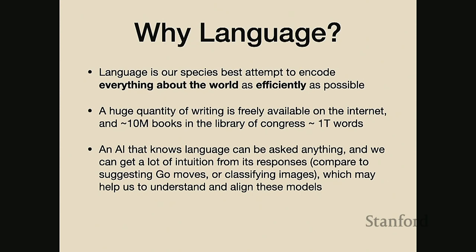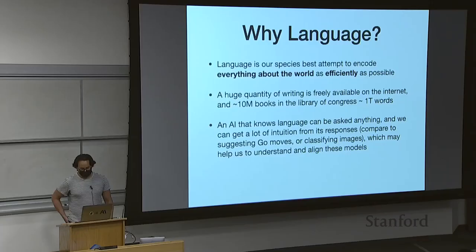There are also a huge number of books. Very roughly speaking, at a Fermi estimate level, there's something like 10 million books in the Library of Congress, which very roughly means something like a trillion words out there in books. And there's actually much more language information out on the internet. So there's a lot of data for AI models to learn from.